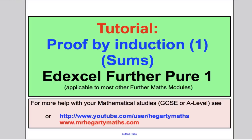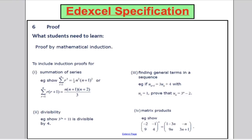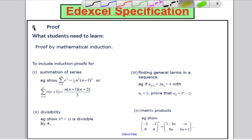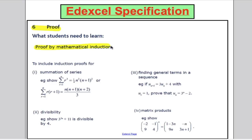As always, let's take a look at the Edexcel specification to see what we need to learn. We are in section 6, doing proof, and students must know proof by mathematical induction. There are four types of mathematical induction you need to know: sum of series, finding general terms of iterative series, divisibility, and matrix products.